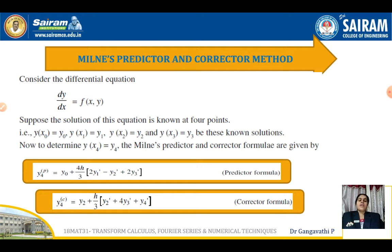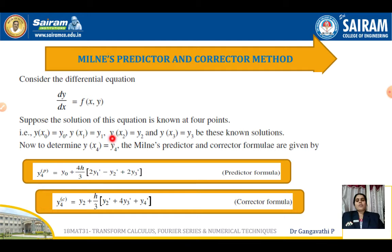We will start from x₀, x₁, x₂, x₃ and the corresponding values of y: y₀, y₁, y₂, y₃ will be given, and x₄ will also be given at which we have to find the value of y₄. So the conditions given are: y(x₀) = y₀, y(x₁) = y₁, y(x₂) = y₂, y(x₃) = y₃ — all known values — and y(x₄) = y₄ needs to be evaluated using Milne's Predictor and Corrector Formula.